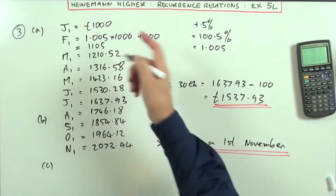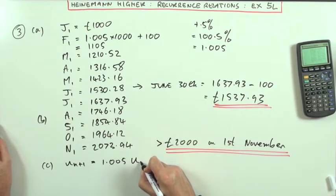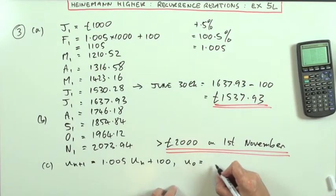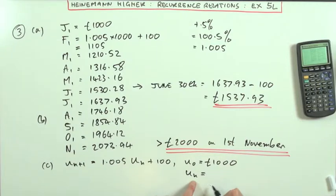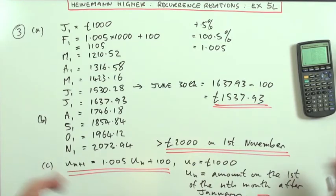Part C says, what's the recurrence relation? It's the thing I've been using all along. So, to get the following month's one, I do 1.005 times the previous month's one, plus 100, starting with u_0 equal to £1,000. And an explanation just that, u_n stood for the amount on the 1st of the nth month after January. I don't need to explain what u_(n+1) means, because that's just implied by u_n. So, there it is. Question 3.